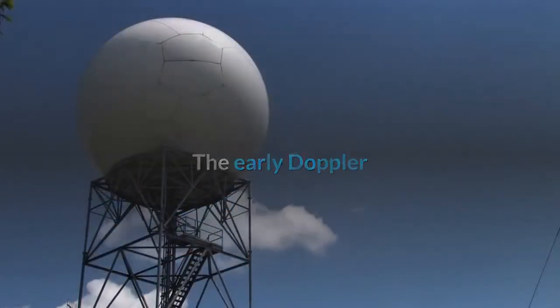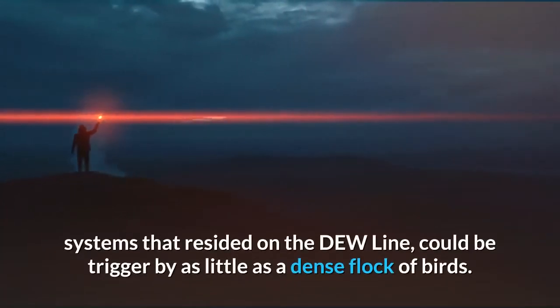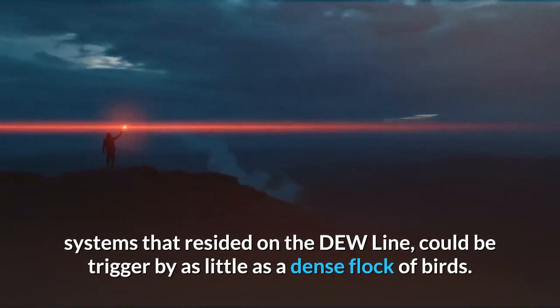The early Doppler systems that resided on the dew line could be triggered by as little as a dense flock of birds.